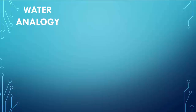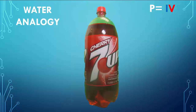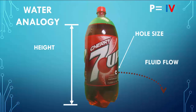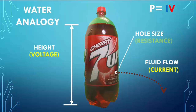Hopefully, the explanation will give you a general understanding about the relationships of voltage, current, resistance, and power. Say you have a liter of soda in a plastic bottle. You have the height of the soda fluid shown here, and near the bottom is a hole punched where the size of the hole along with the fluid height governs the amount of the fluid flow. For this water analogy describing electricity, you have the height comparable to voltage, the fluid comparable to current, and the hole size comparable to resistance.